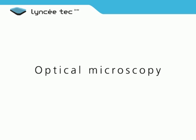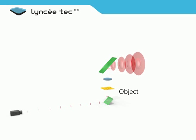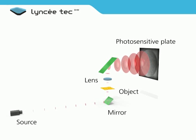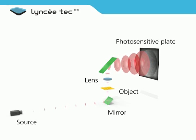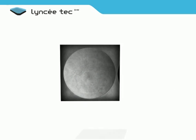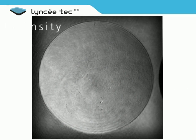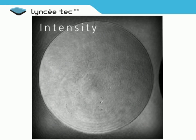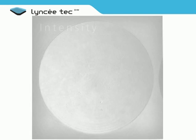In conventional microscopy, the object is lit by a conventional light source and enlarged by a lens system. The image shows only contrasts in intensity. No accurate 3D or vertical measurement is possible.